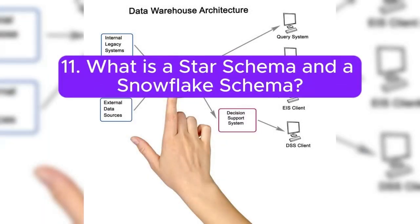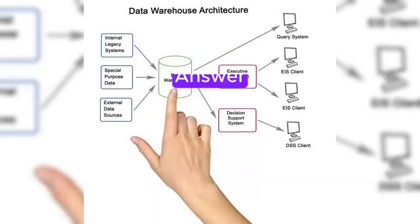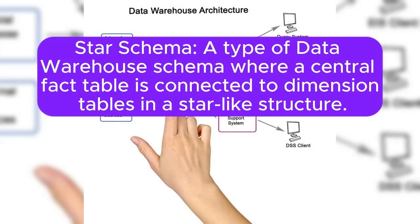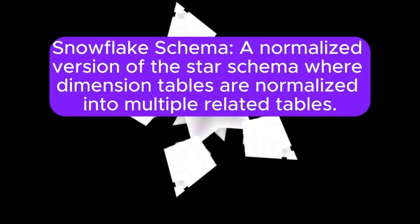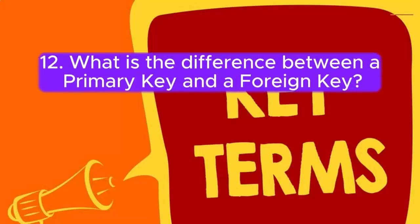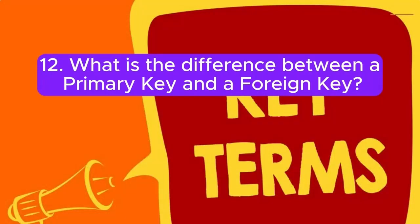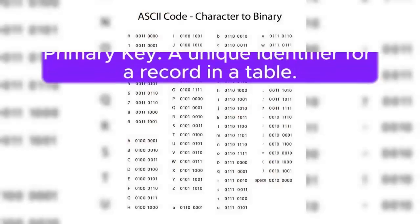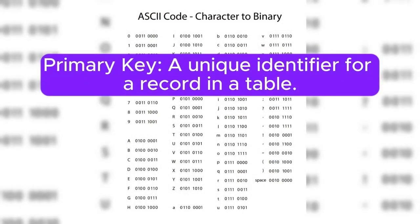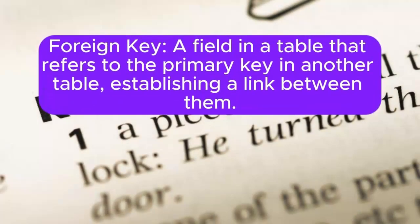11. What is a star schema and a snowflake schema? Answer: Star schema is a type of data warehouse schema where a central fact table is connected to dimension tables in a star-like structure. Snowflake schema is a normalized version of the star schema, where dimension tables are normalized into multiple related tables. 12. What is the difference between a primary key and a foreign key? Answer: A primary key is a unique identifier for a record in a table. A foreign key is a field in a table that refers to the primary key, establishing a link between them.